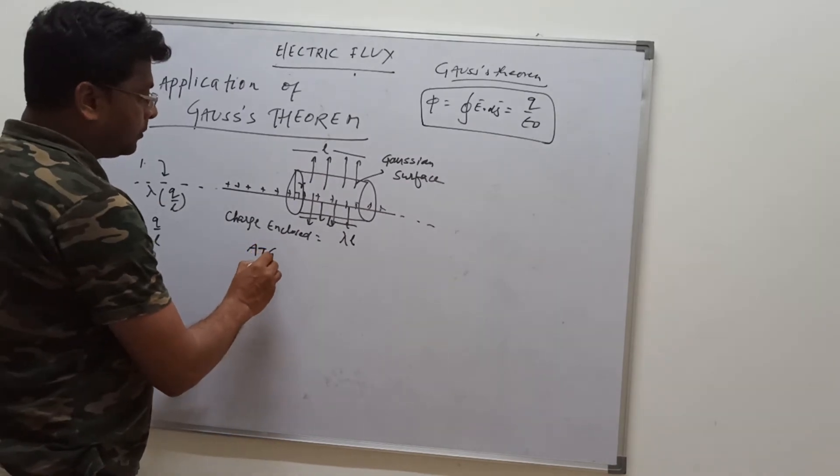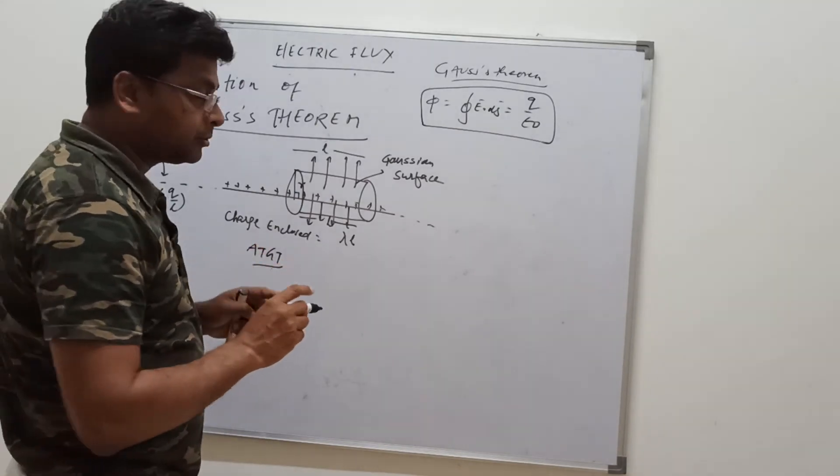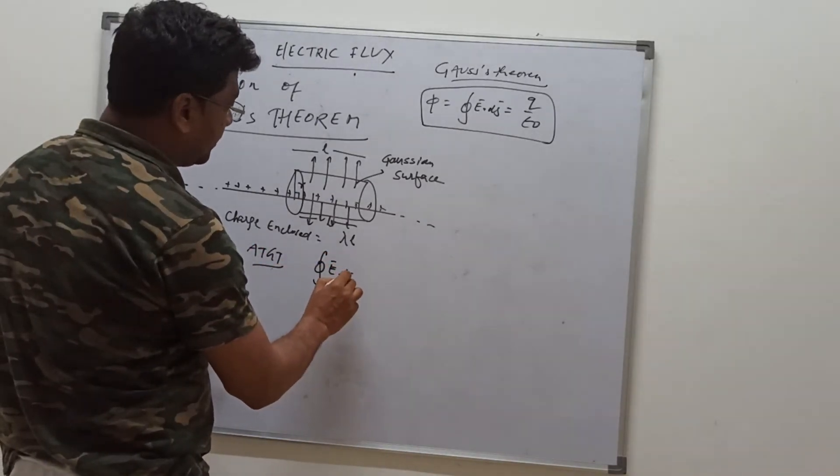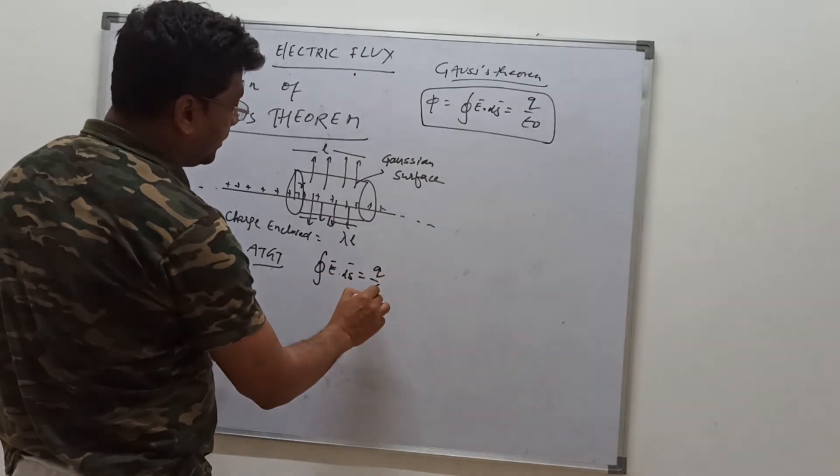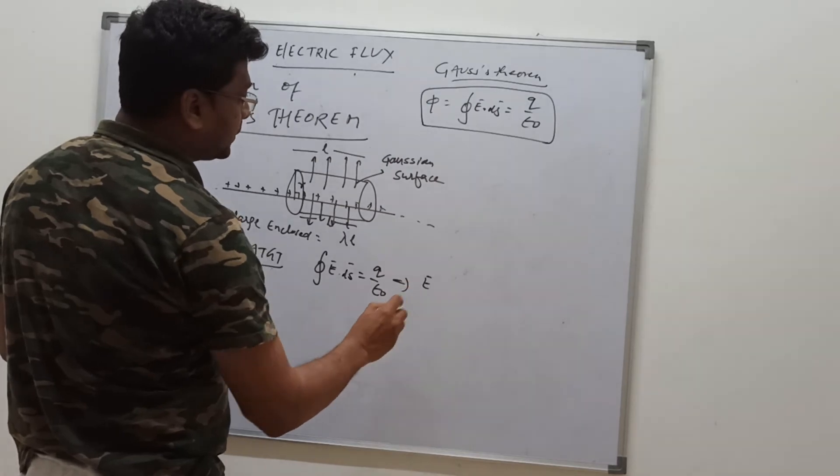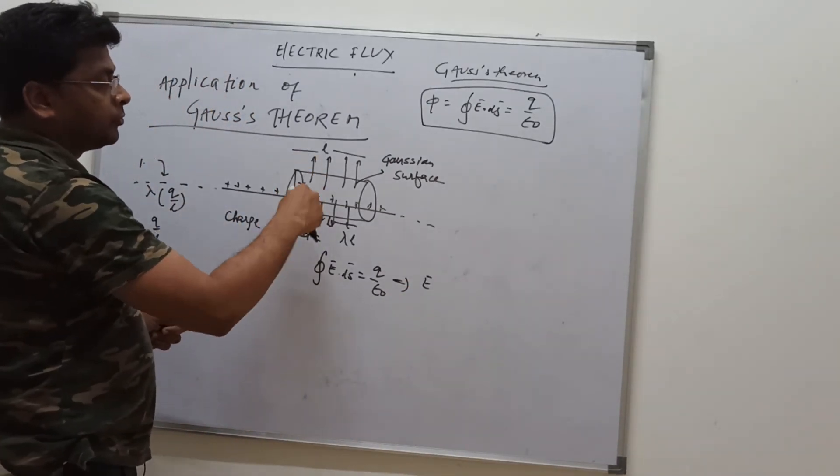Now according to Gauss theorem, integral of E vector dot dA vector equals q enclosed by epsilon naught.